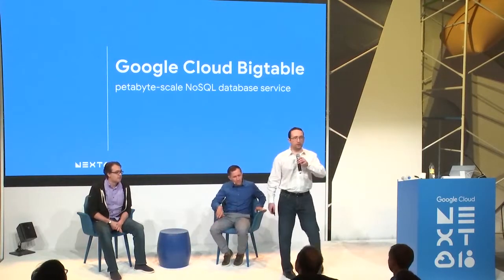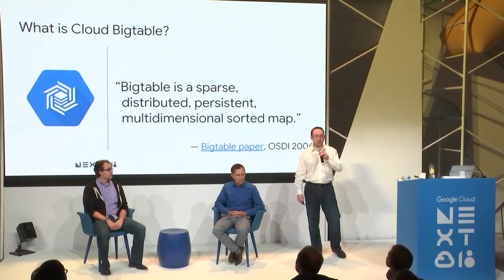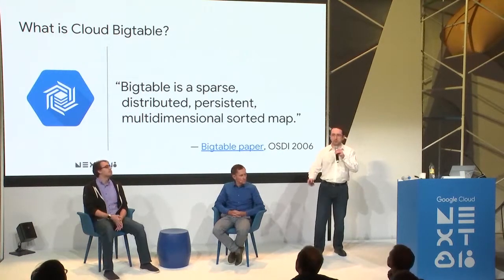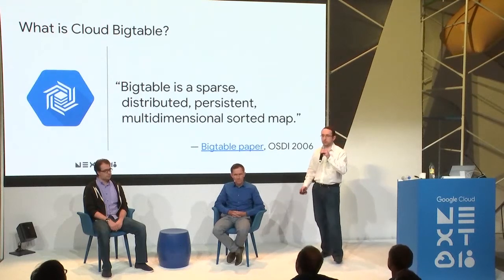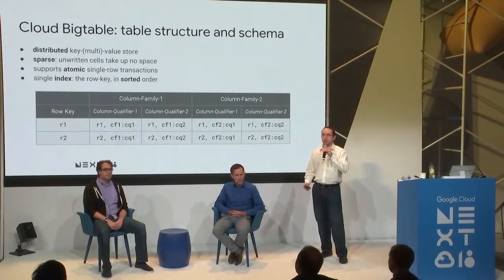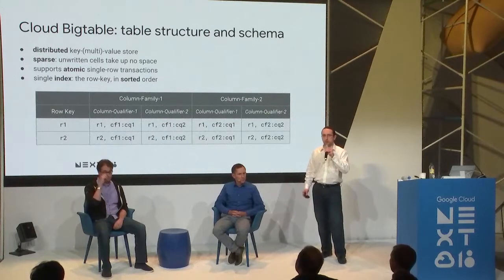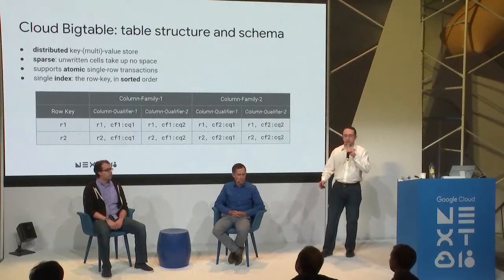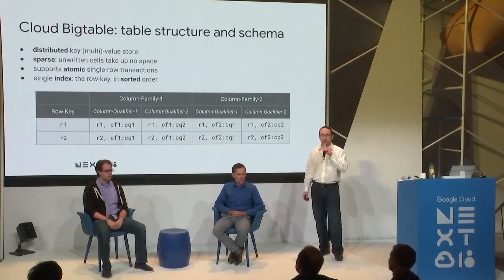Thank you, Steve. Let's talk about Cloud Bigtable's feature set. Bigtable is a sparse, distributed, persistent, multidimensional sorted map — the description from the 2006 paper. It's a distributed key-multivalue store; sparse in the sense that unwritten cells don't take up space. It supports atomic single-row transactions and has a single index — the row key. There are no secondary indices except for the row key. You access different cells using the row key, column family, and column qualifier to uniquely identify them.